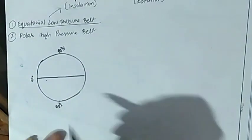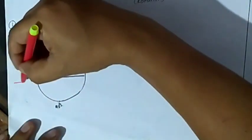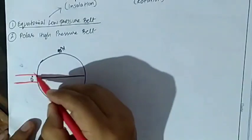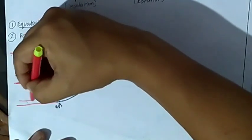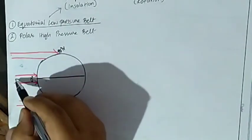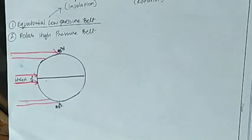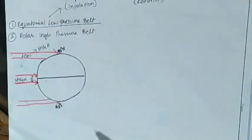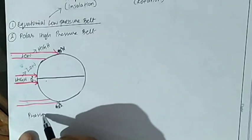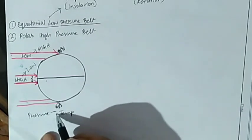So the equatorial areas — this is the equator, and this is your north pole and south pole respectively. As we all know, equatorial areas receive the direct rays of the sun, which we have learned in the previous video, and the polar areas receive the slanting or oblique rays of the sun. Areas receiving direct rays will always result in high temperature, and areas receiving slanting rays will have low temperature. Because of the low temperature at the poles, the pressure will be high, and because of the high temperature at the equator, the pressure will be low — the inverse relation between pressure and temperature.